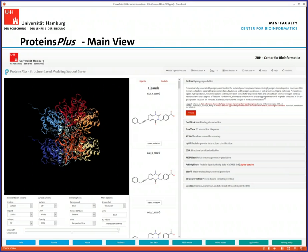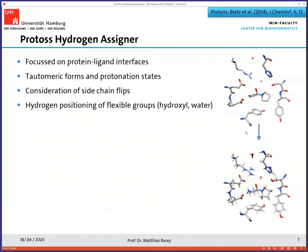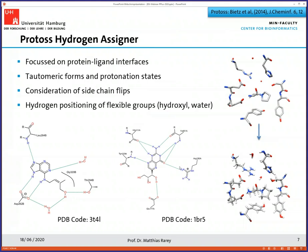Probably the most well-known and one of the earliest tools we developed is Protoss. Protoss was a joint development with BioSolveIT over several years, and the main publication is by Stefan Wietz from 2014. Protoss is a hydrogen assigner — it starts with the binding site as available in the PDB file, assigns hydrogens, clarifies the tautomeric forms of the ligands and the protonation states, considers sidechain flips in the active site, and calculates all the hydrogen positions of flexible groups. What's special about Protoss is that it has a good resolver for tautomeric forms in the binding site, taking the interactions between ligand and protein into account.